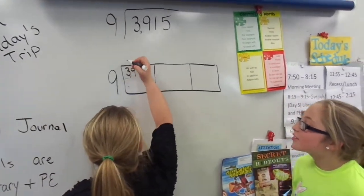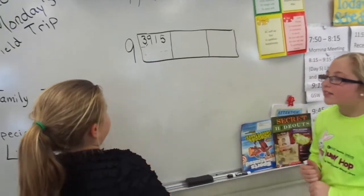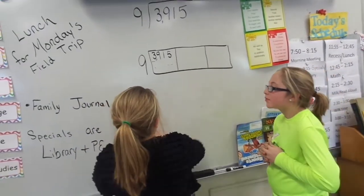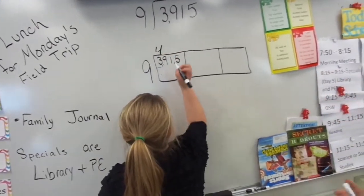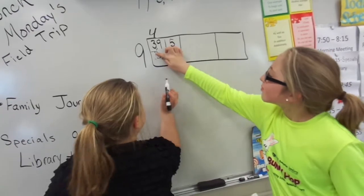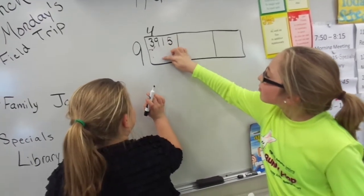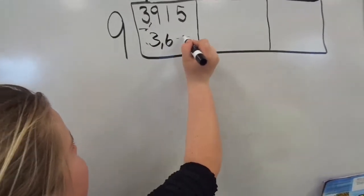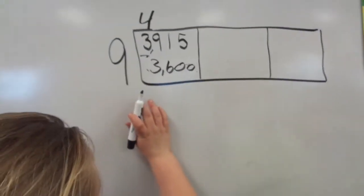So first, we have to figure out what times 9 equals 39. It would be 4. The answer would be 36. No, that part's right. When we subtract those, 3,600.